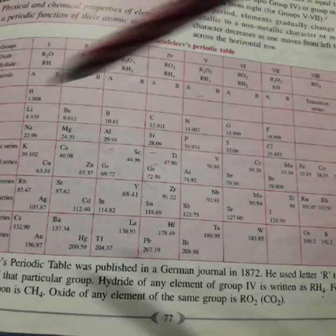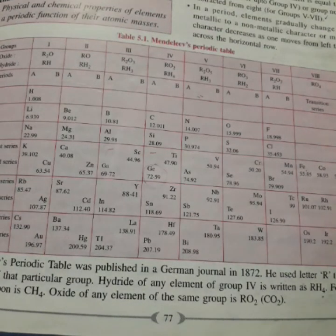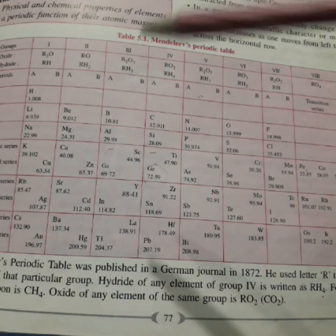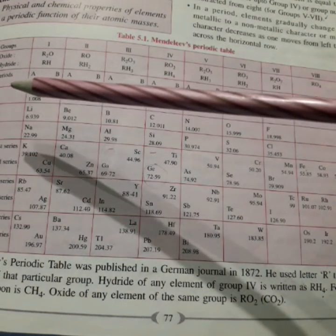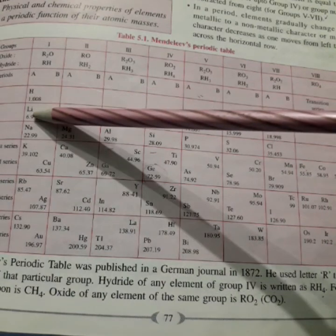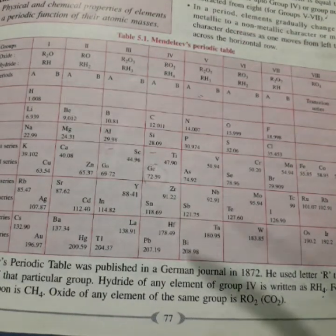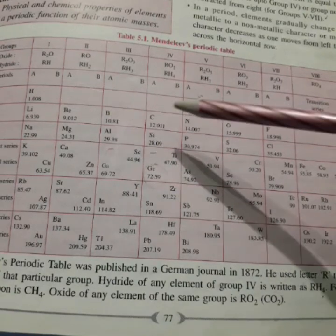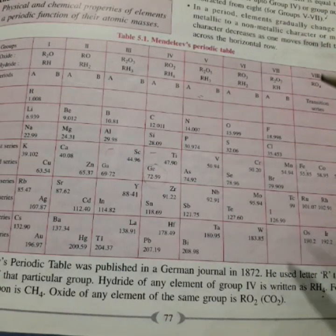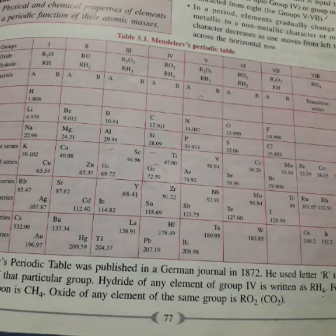Then, there are 7 horizontal rows known as periods. And in any period, the elements gradually change from metallic to a non-metallic character. Like you can see this group, lithium is a metal, beryllium is a metal. Then, boron is a metalloid, non-metal, non-metal, non-metal, non-metal. Okay. So, these are the essential features of Mendeleev's periodic table.